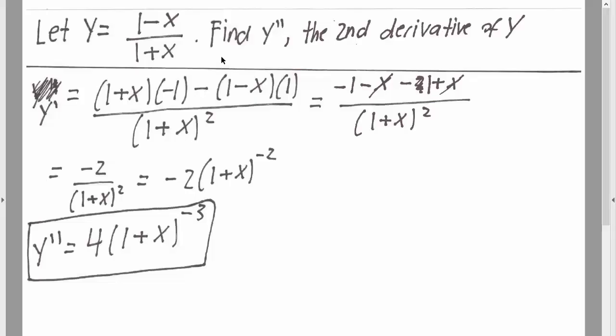Okay, so for this question we want to find the second derivative of y. To get started we first take the derivative of y, and by doing so we need to do the quotient rule. So we have the bottom term 1 plus x times the derivative of the top negative 1.